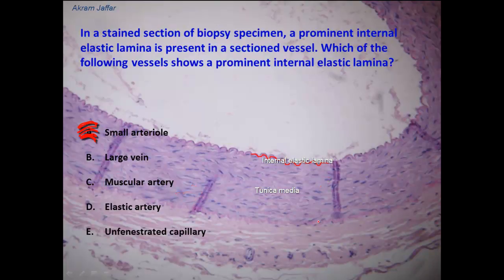In this section of a vessel, we can see another lamina here, which looks like the internal elastic lamina, and it is the external elastic lamina. Clearly it is located between the tunica media and the tunica adventitia.